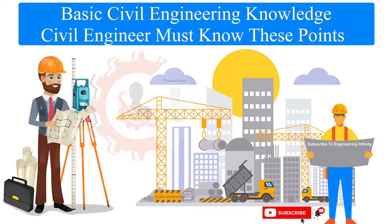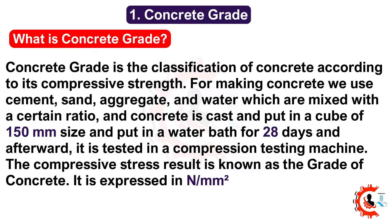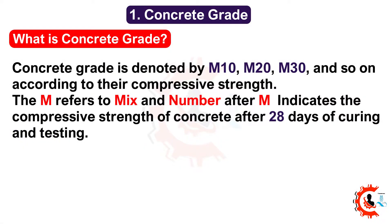Basic civil engineering knowledge — civil engineers must know these points. One: concrete grades. Concrete grade is the classification of concrete according to its compressive strength. For making concrete, we use cement, sand, aggregate, and water mixed in a certain ratio. Concrete is cast and put in a cube of 150 millimeters size, placed in a water bath for 28 days, then tested in a compression testing machine. The compressive stress result is known as the grade of concrete, expressed in newtons per square millimeter. Concrete grade is denoted by M10, M20, M30, and so on. The 'M' refers to mix, and the number after M indicates the compressive strength after 28 days of curing and testing.